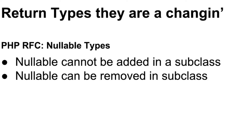Now, a couple of rules. Nullable — that question mark — cannot be added in a subclass. If you have a base class with a method that returns an int, and you subclass that class and override that method, you can't at that point say question mark int. If it's not there, it cannot be added. It can, however, be removed in a subclass.